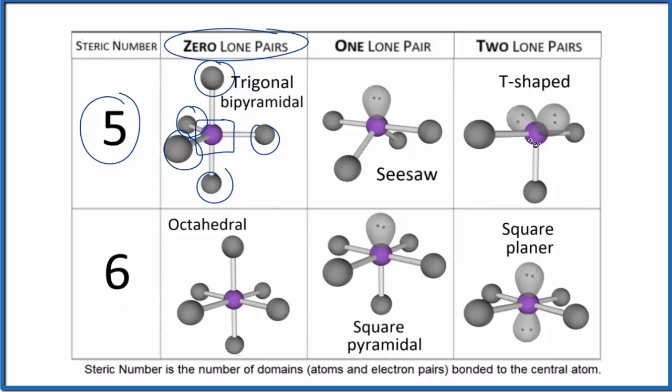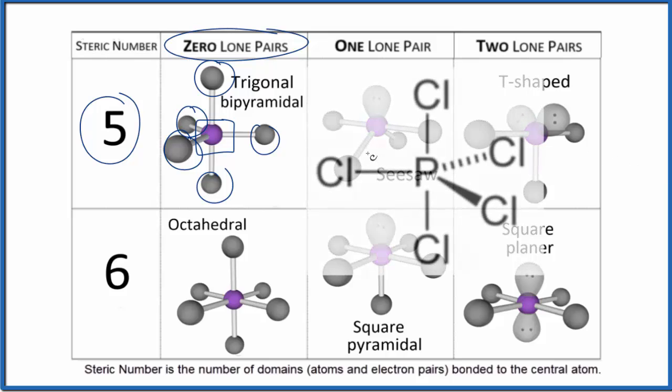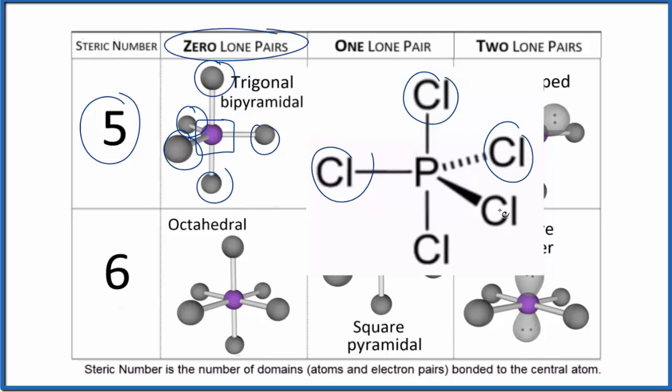A good example is PCl5. So we have our phosphorus in the center and we have one, two, three, four, five chlorine atoms around, no lone pairs, trigonal bipyramidal.